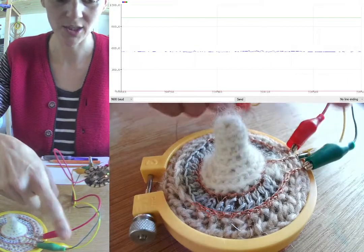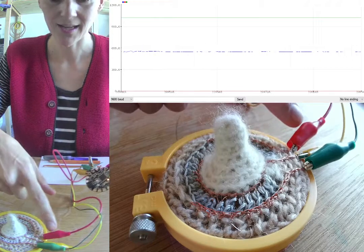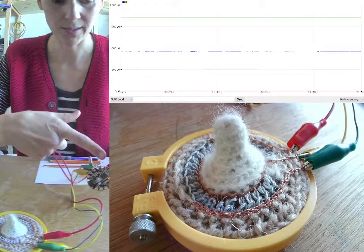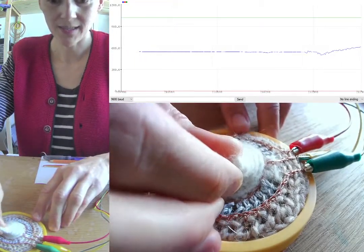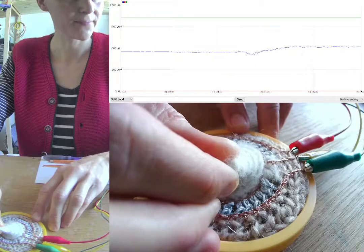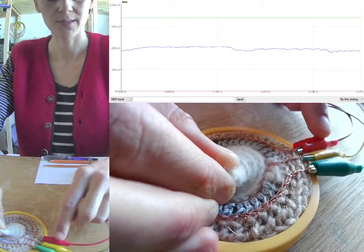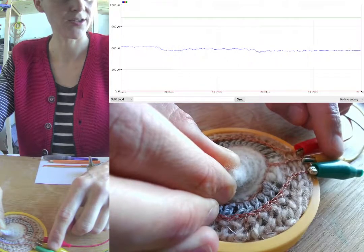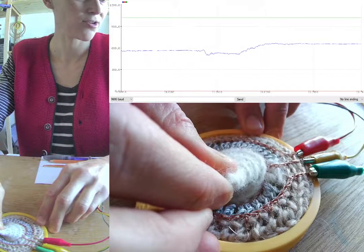We have the green going to ground, the yellow going to analog 7, and the red going to plus 3.3 volts. And so when I wiggle it towards the ground pin, I'm stretching the grey yarn between plus and analog. So the graph increases.